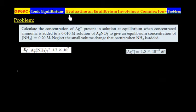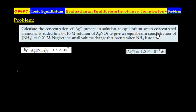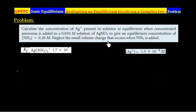This question is about evaluating an equilibrium involving a complex ion. Calculate the concentration of Ag⁺ present in solution at equilibrium when concentrated ammonia is added to a 0.01 M solution of AgNO₃ to give an equilibrium concentration of ammonia equal to 0.2 M. Neglect the small volume change that occurs when NH₃ is added.